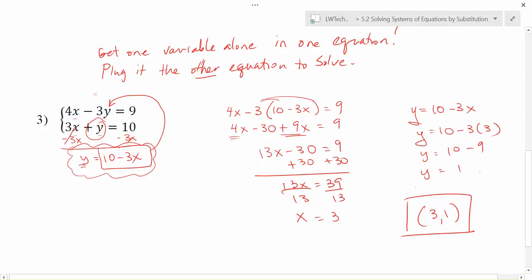And again, if you just want a sanity check, you can go back to your original equations here, plug in 3 for x and 1 for y, and you should get a true equation for both of them. And sure enough, here if you put in 3, you'd get 12 minus 3, which is 9. Here, if you put in 3 for x and 1 for y, you'd get 9 plus 1, which is 10. So definitely a solution that works, and we can verify that in each equation as well.